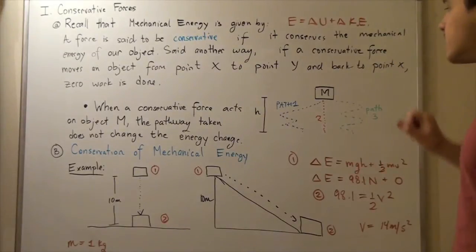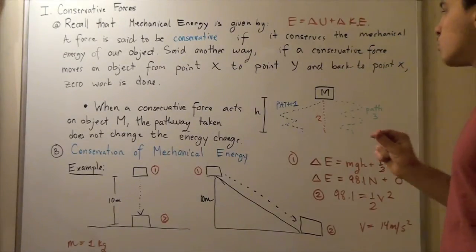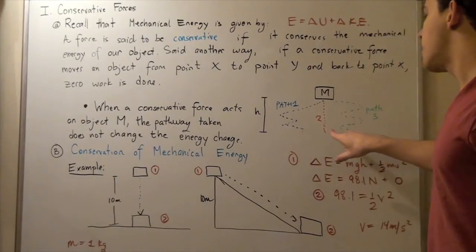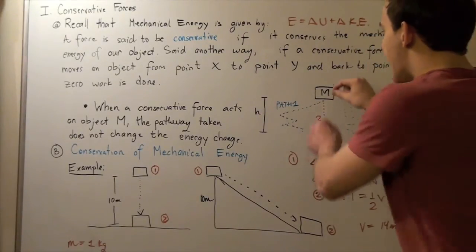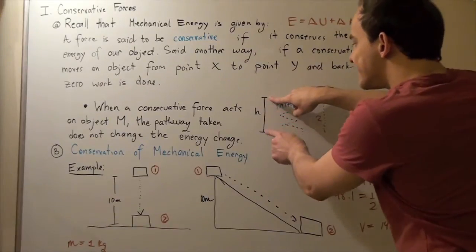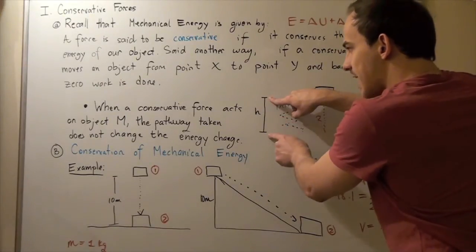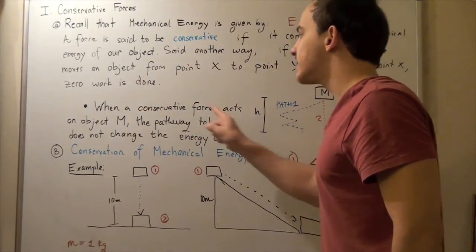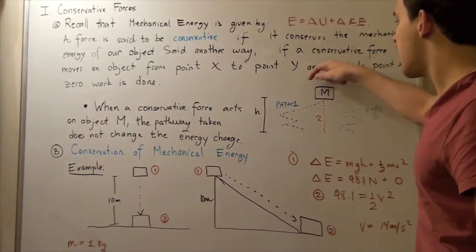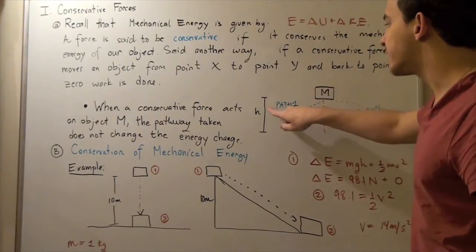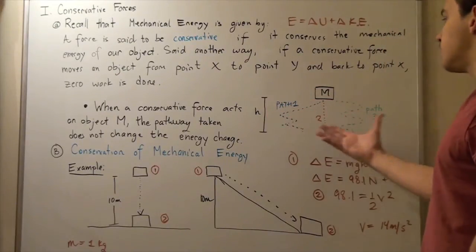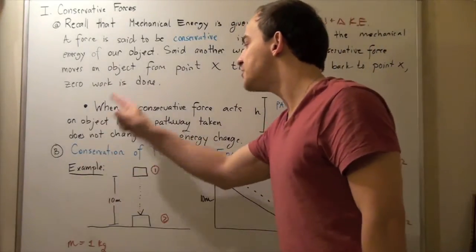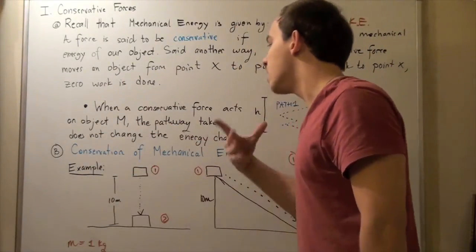Let's look at a system of mass m with three different paths. In each case, our mass m travels a distance h. When a conservative force acts on object m and moves it a distance h over different paths, the pathway taken does not change the energy of the system — it does not change the mechanical energy.